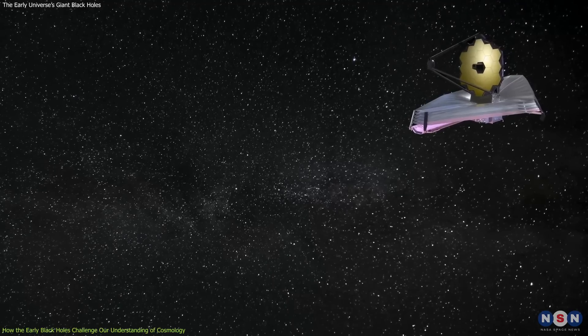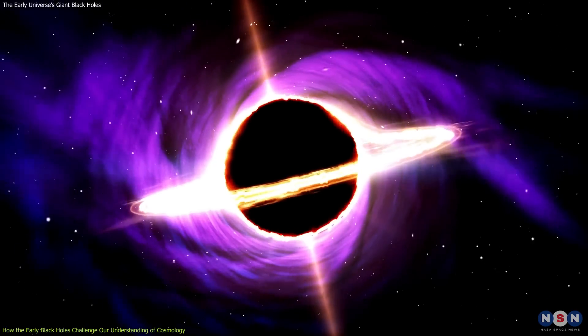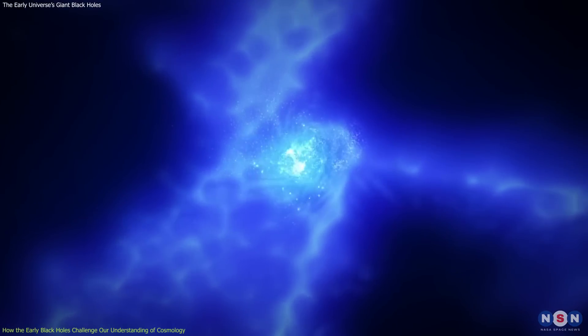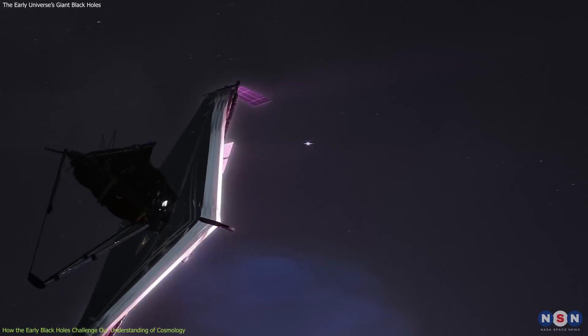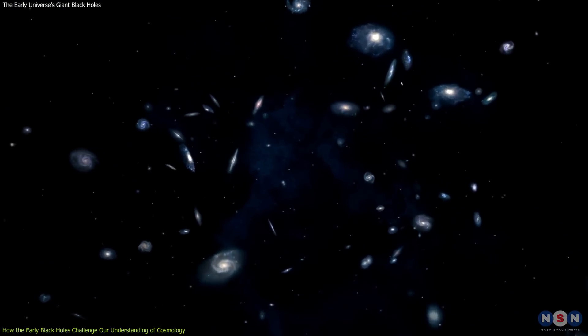For example, JWST could measure how much gas and stars these black holes consumed or ejected from their galaxies, which could affect their star formation history and chemical composition. By doing so, Webb could help us solve one of the biggest mysteries in cosmology: how galaxies and black holes co-evolved in the young cosmos.